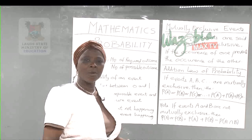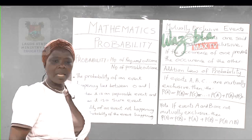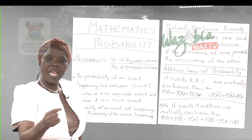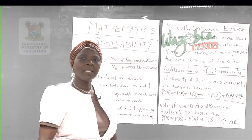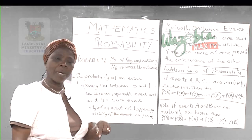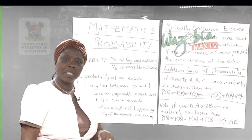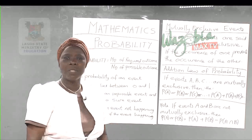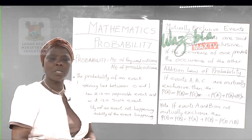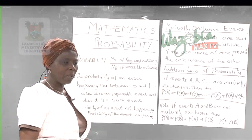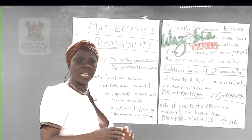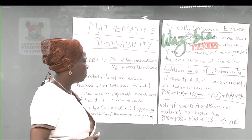For example, if I toss a coin and the head appears, the appearance of head prevents the appearance of the tail. So the two of them cannot occur at the same time. That shows the two events are mutually exclusive.